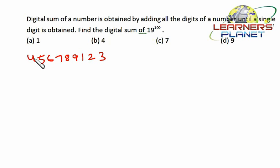So let's begin. 4 plus 5 is 9, 9 plus 6 is 15, 15 plus 7 is 22, 22 plus 8 is 30, then 39, 40, 41, 42 and then plus 3 gives 45. That's actually 9.